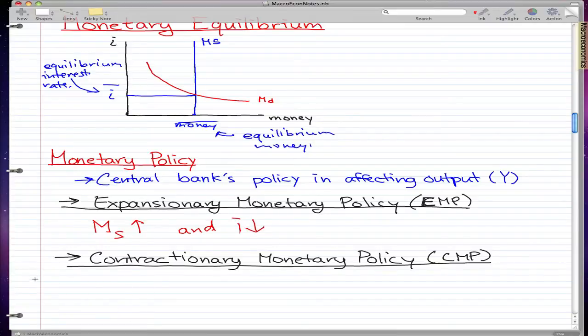In a contractionary monetary policy, the opposite happens. Money supply decreases and interest rate increases.